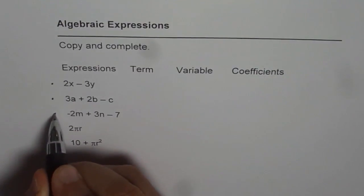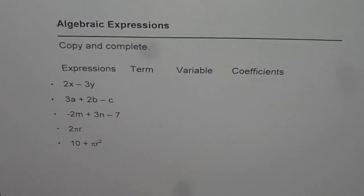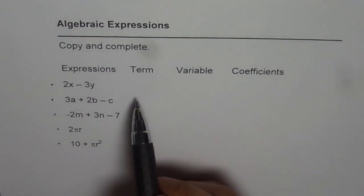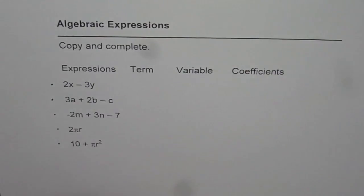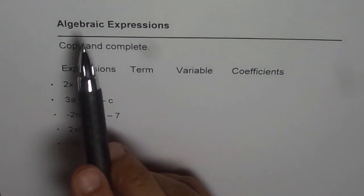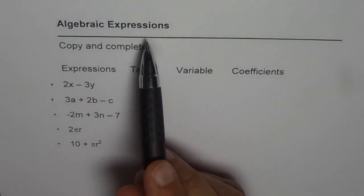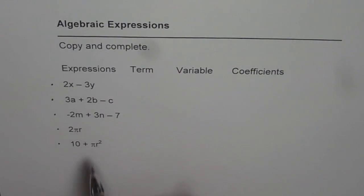So that is first one, second, third, fourth, and fifth. For each of these algebraic expressions we need to write down the terms, variables, and the coefficients. Now an algebraic expression is one which has variables, that makes it algebraic, and just an expression not an equation, it will not have an equal sign. So algebraic expressions have one or more variables and should not have an equal sign.